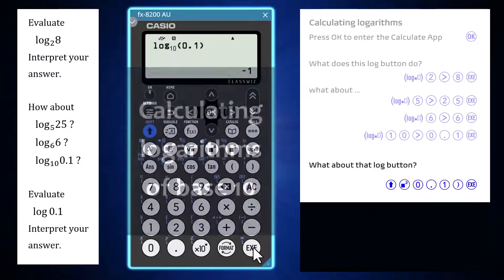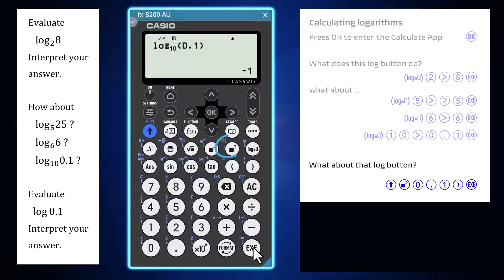The 8200 also has a log command, entered via shift and the squared key. This logarithm command has only one argument. Enter 0.1 as that argument and press execute.